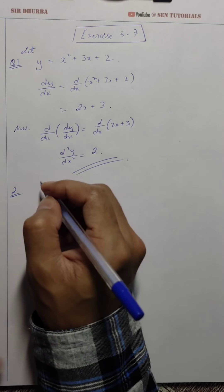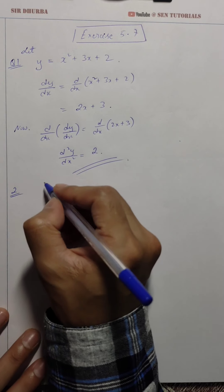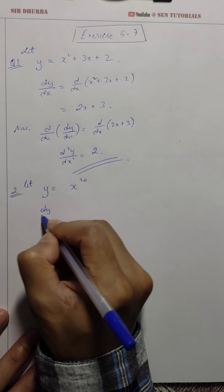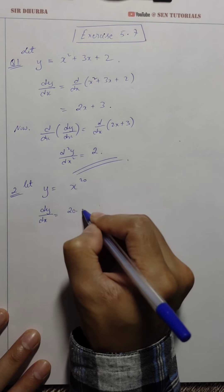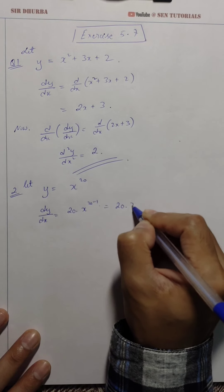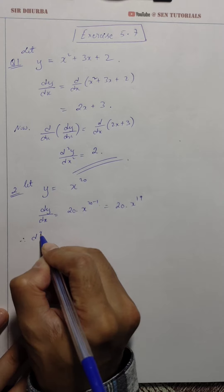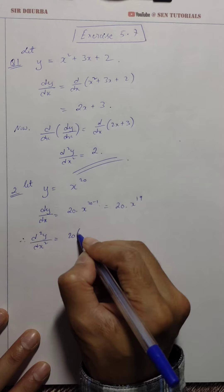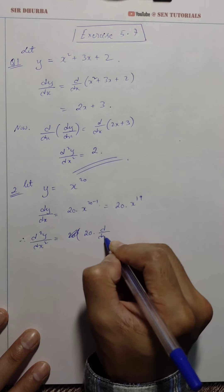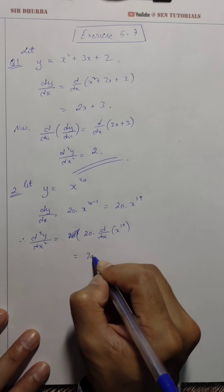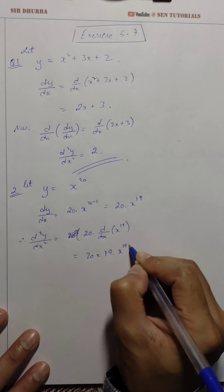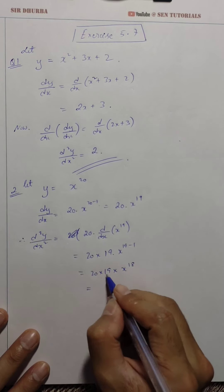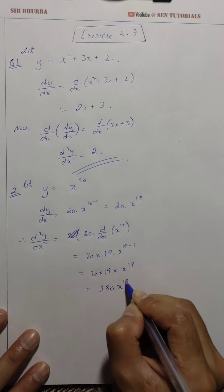Question 2: let y = x²⁰. The first-order derivative: dy/dx = 20x¹⁹ using the rule d/dx(xⁿ) = nxⁿ⁻¹. Therefore the second-order derivative, d²y/dx², is the derivative of 20x¹⁹, which gives 20 × 19 × x¹⁸ = 380x¹⁸.